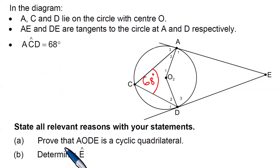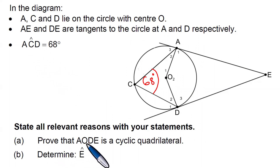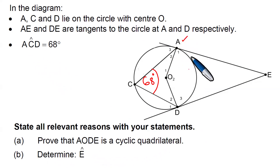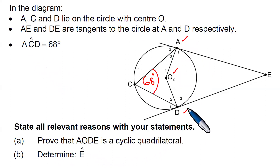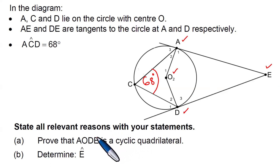State all relevant reasons with your statements. We need to prove that AODE is a cyclic quadrilateral. Here is A, O, D, E — and we want to prove that this four-sided shape is a cyclic quad.